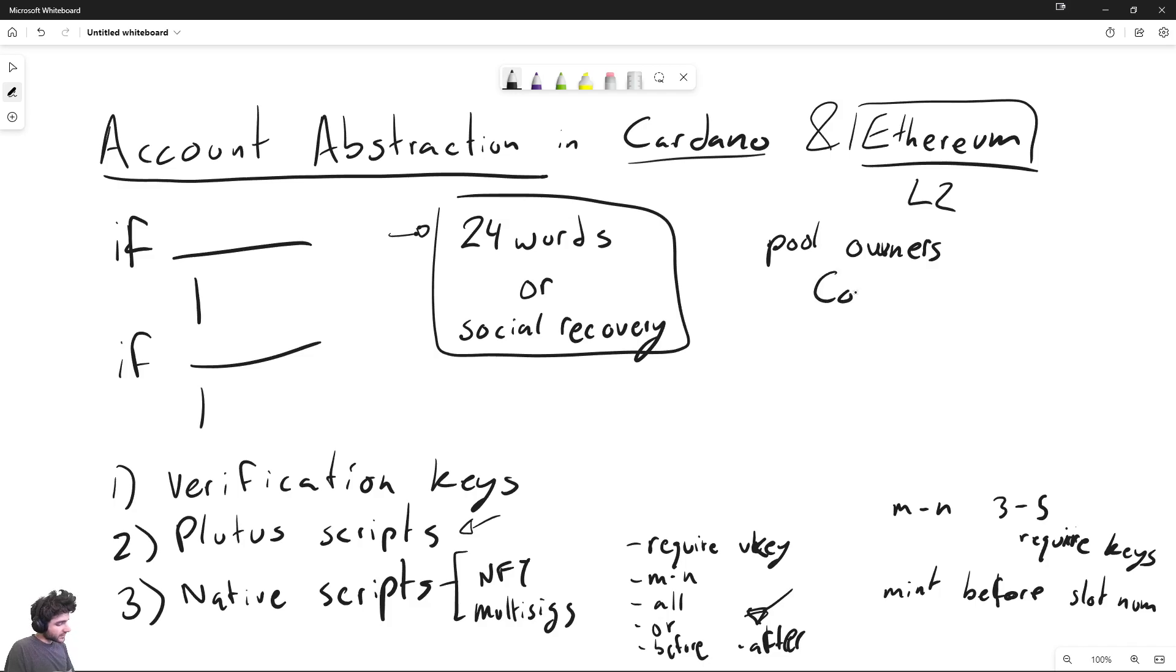However, there is a paper by IOHK called Conclave, which talks about basically ways for people to aggregate their collateral, their pledge together to basically create one pool as a group. And one way you could implement this is through scripts as the pool owner. So Conclave is one effort that has started, you can find the research paper on IOG's website that would basically move pool owners from being just keys to also being a contract of some kind.